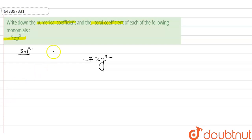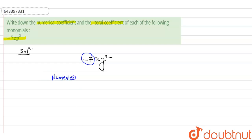So, the numerical value in this type of examples — in this type of questions — the numerical value will be the numerical coefficient, like minus, with sign. So here our numerical coefficient is minus 7.